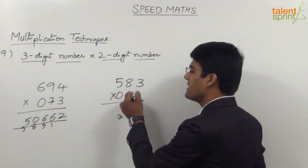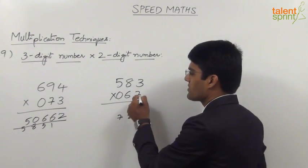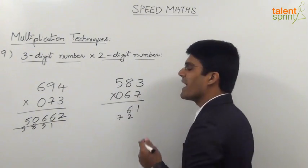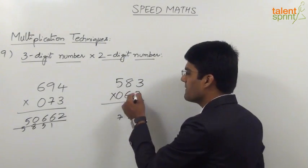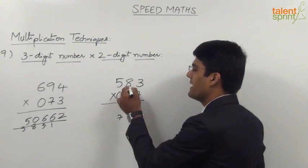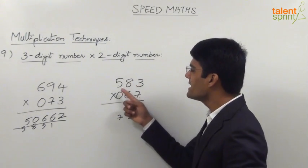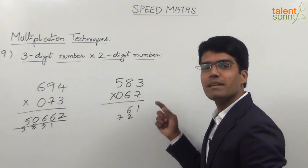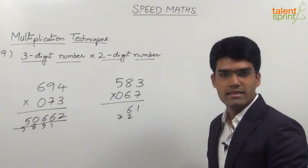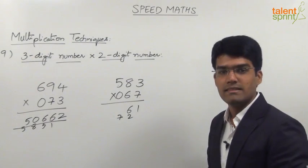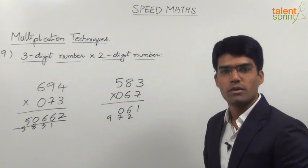The third step is cross multiplication of units with hundreds and tens place multiplication. So 7 × 5 = 35 and 3 × 0 = 0, giving 35 + 0 = 35. Then 8 × 6 = 48. So 48 + 35 = 83, plus the carry of 7 gives 90. We take 0 in the answer and 9 is carried forward.